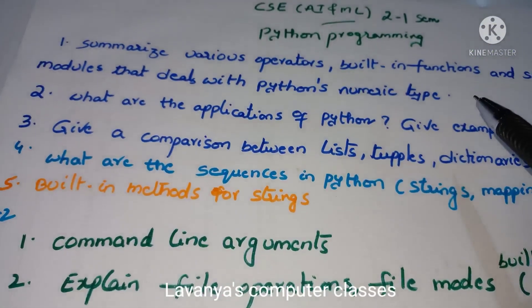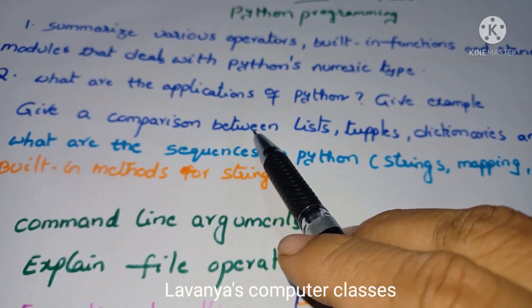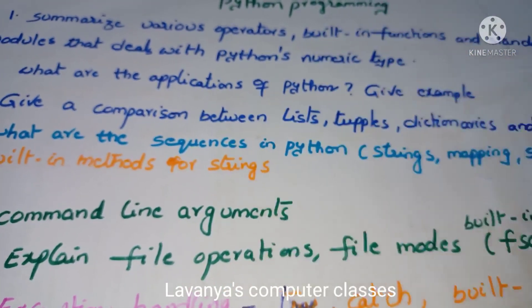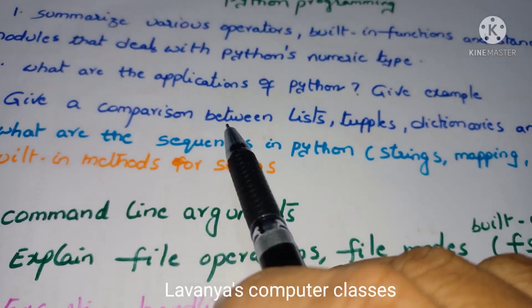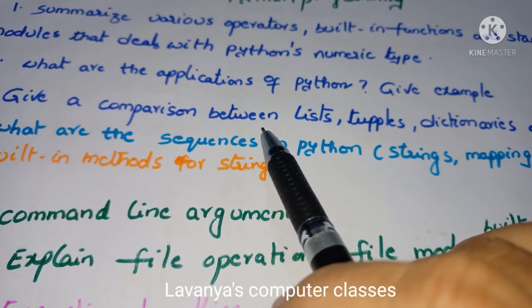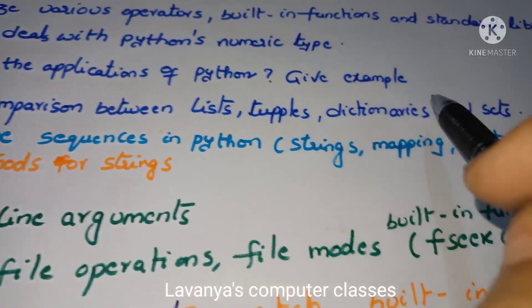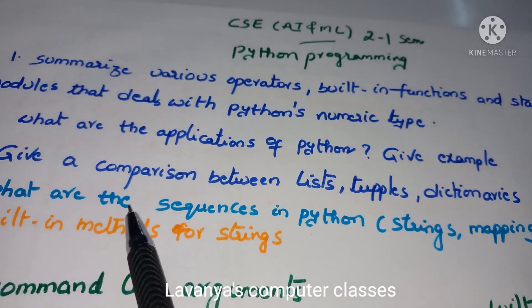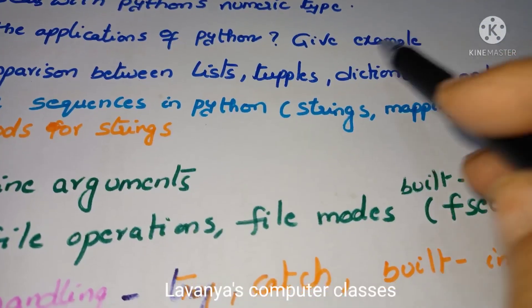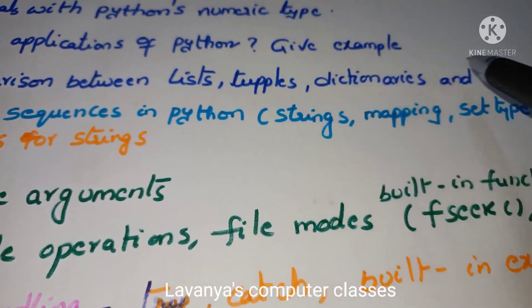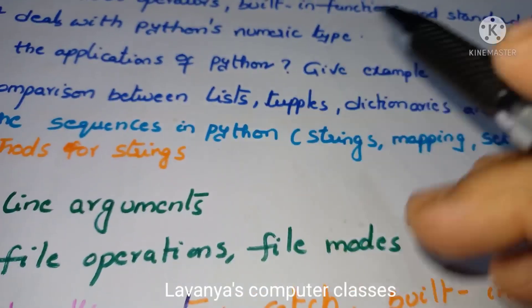These are all called sequences. In sequences we have strings, lists, tuples, mapping, and set types. Read individually — what is a list, what are the operations on list, what is a tuple, what are the operations on tuple, dictionaries, and sets. Alternatively, read one combined question: give a comparison between lists, tuples, dictionaries, and sets. That covers all four in one question.